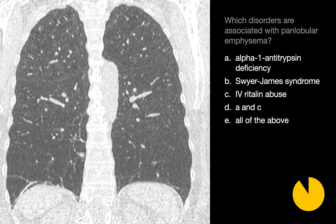What disorders are associated with panlobular emphysema? The answer is E, all of the above: alpha-1 antitrypsin deficiency, Swyer-James syndrome, and IV Ritalin abuse.